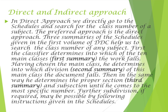The ten main classes form the first summary, and the hundred divisions form the second summary. Then the classifier determines the proper section — the third division of the broad main classes — called the third summary, comprising one thousand sections. Further subdivisions follow until the most specific number is reached, and further subdivisions may be possible by following the instructions in the schedules. This is the direct approach: we go directly to the schedules through the summaries given in the first volume — first summary, second summary, third summary — then into the schedules for further subdivisions.